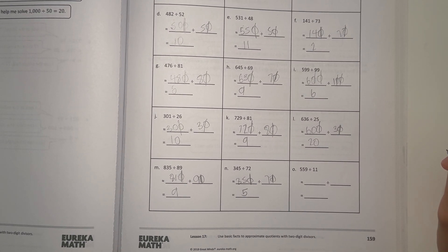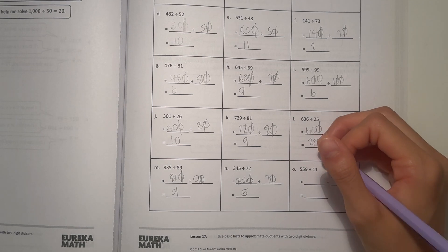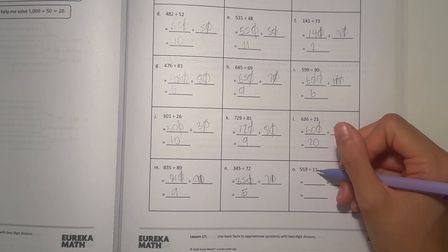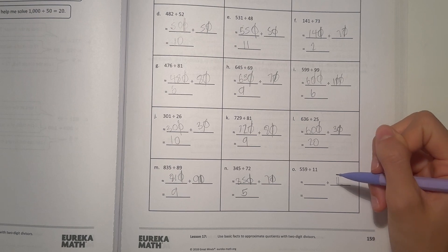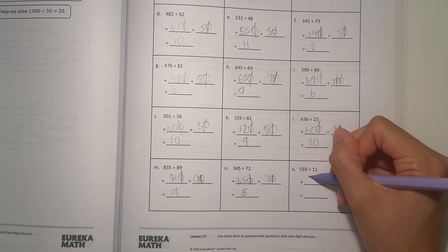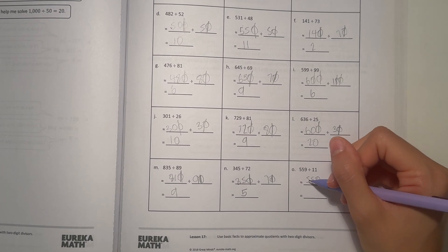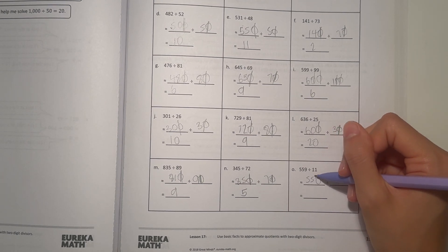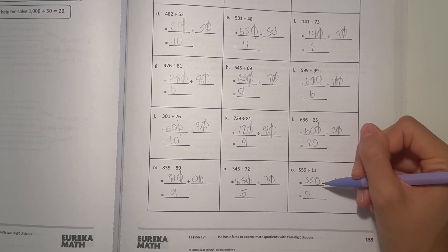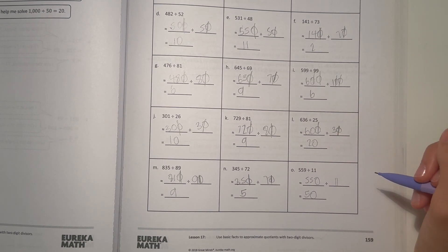559 divided by 11. Let's see, 11 can round to, actually we don't need to round 11, we can leave it as 11. And 559 we can round to 550, because 11 can go into 55. 55 divided by 11, that's just 5, add a 0 at the end. So our answer would be 50. That would be our estimate.